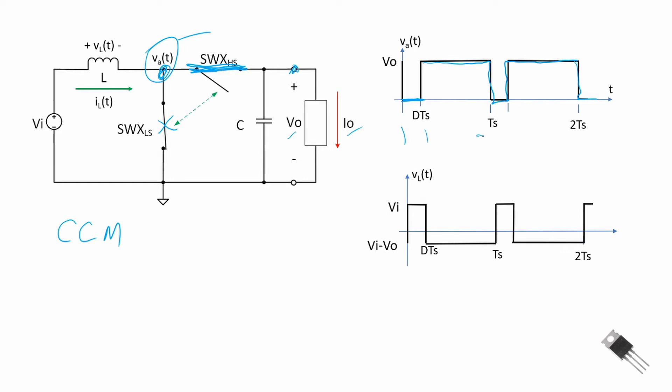Here's our switching period T_s. Now let's look at the voltage across the inductor, because this will allow us to obtain the equations for the current through the inductor. When the switch is closed and the high side switch is open, the voltage across the inductor is the input voltage.